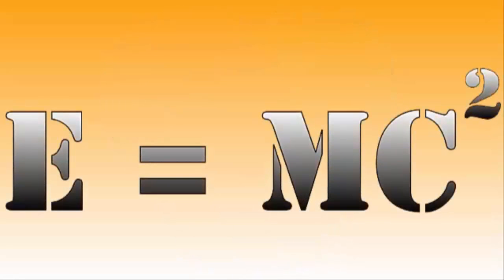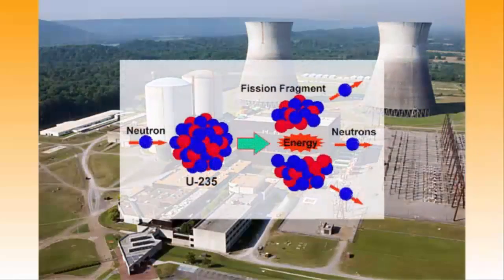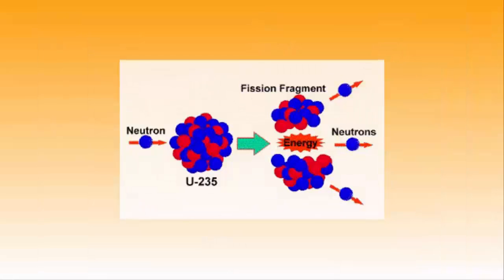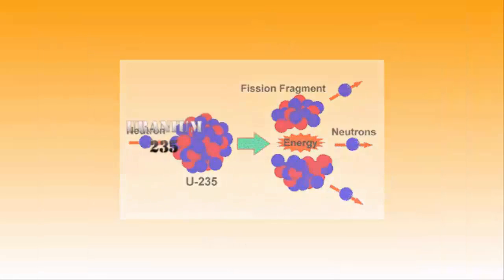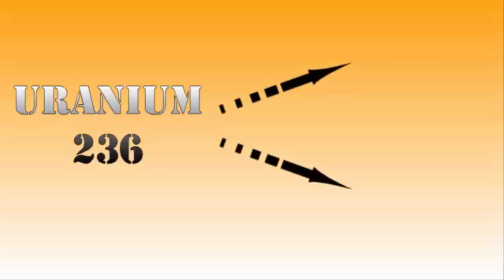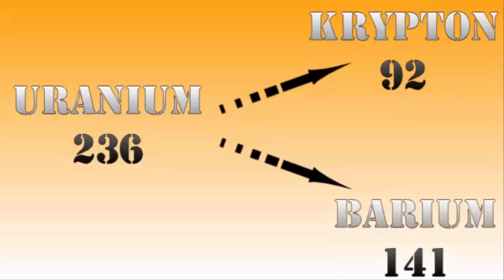Well, we can look at a nuclear power plant using uranium-235 to generate energy. In the fusion reaction of uranium-235, the uranium-235 atom fuses with an incoming neutron, becoming uranium-236, which is unstable and spontaneously splits into, for example, a krypton-92 and a barium-141 molecule.